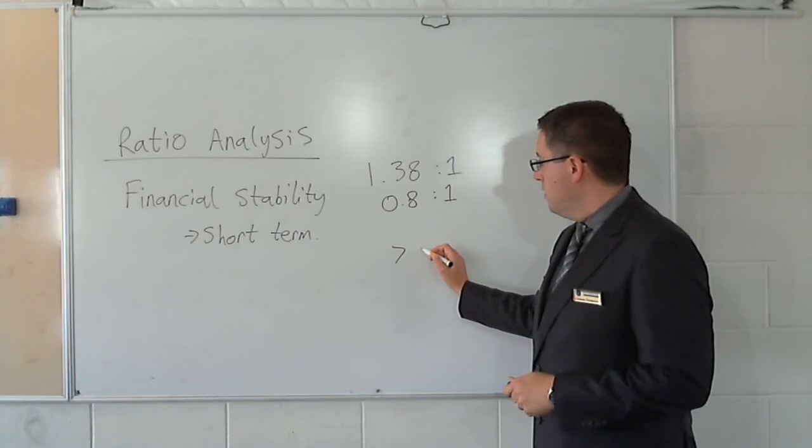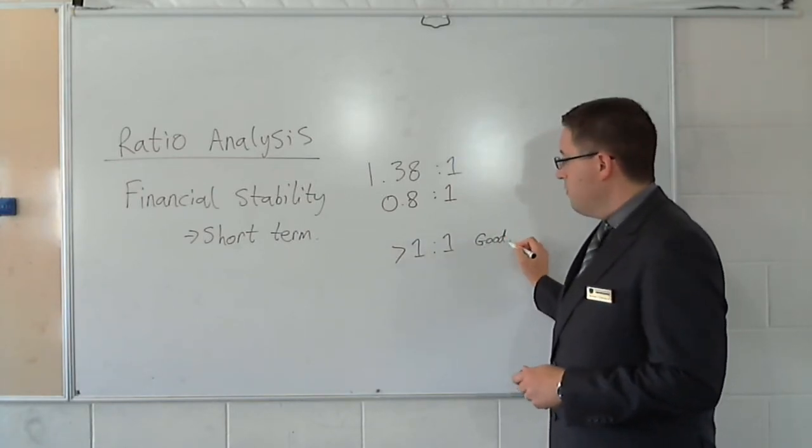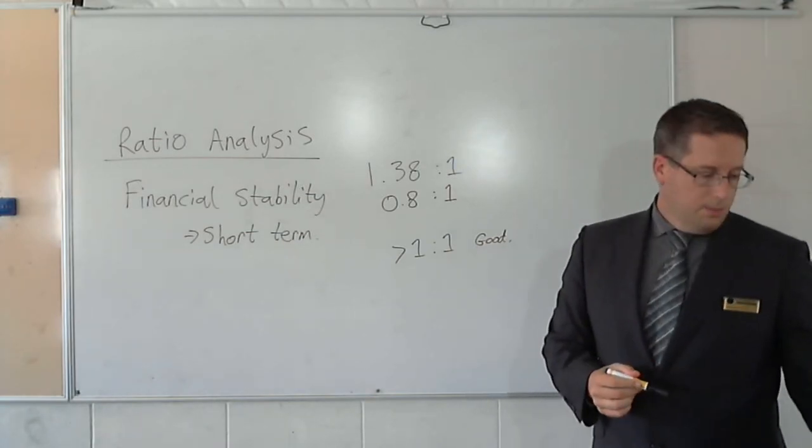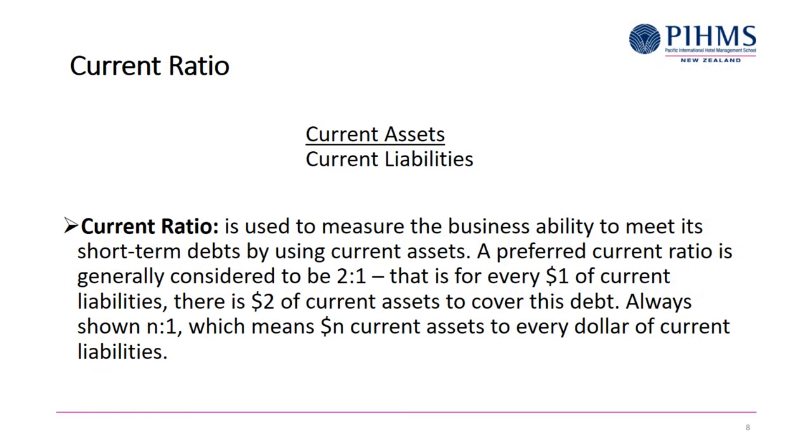So ideally, here's the ideal. So above 1 to 1 is a good place to be. 1 to 1 is the ideal, but the higher the better. So 2 to 1, that's great. If it's below 1, then that's actually a bad sign. If it's below 1 to 1, then it's bad news. They don't have quite enough to repay their debts. So that's the current ratio. A really good thing for every $1 of current liabilities, this is how much of current assets we have.